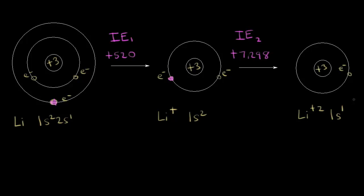We can see there's a big difference between the first ionization energy and the second — 520 versus 7,298 kilojoules per mole. Let's use the three factors discussed in previous videos to explain the reasoning for this extremely large difference in ionization energies.